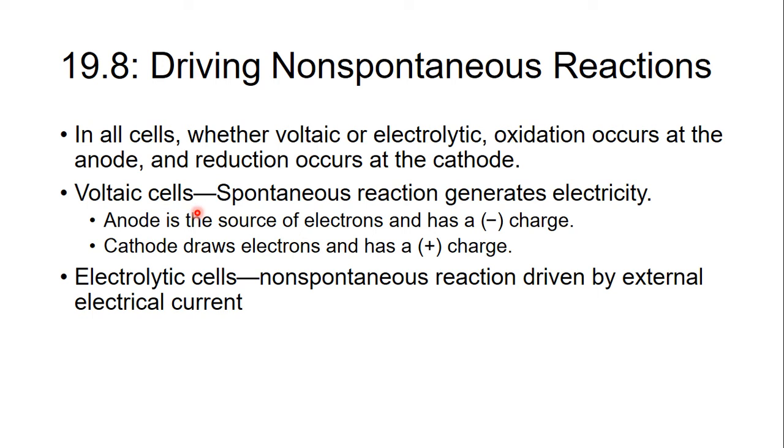In a voltaic cell, your anode has a negative charge and your cathode has a positive charge. If you are doing a non-spontaneous reaction, it's called an electrolytic cell. Here we have an outside power source to drive a non-spontaneous reaction, but it's still the same idea. Oxidation happens at an anode and reduction happens at a cathode.